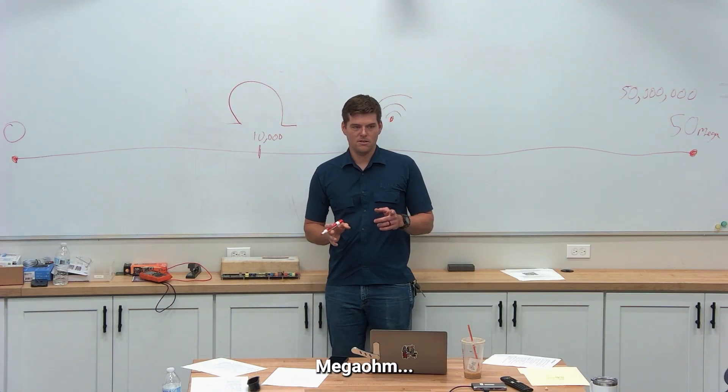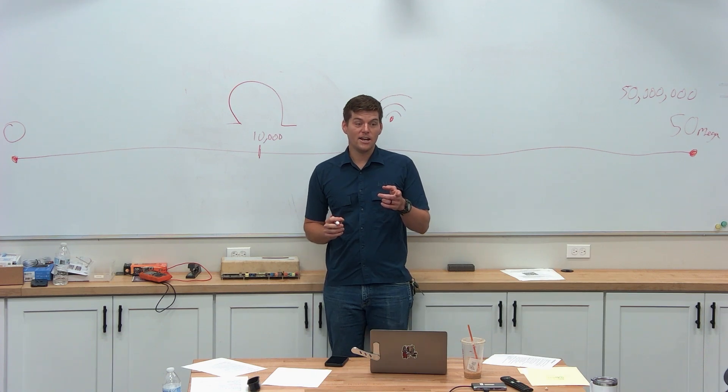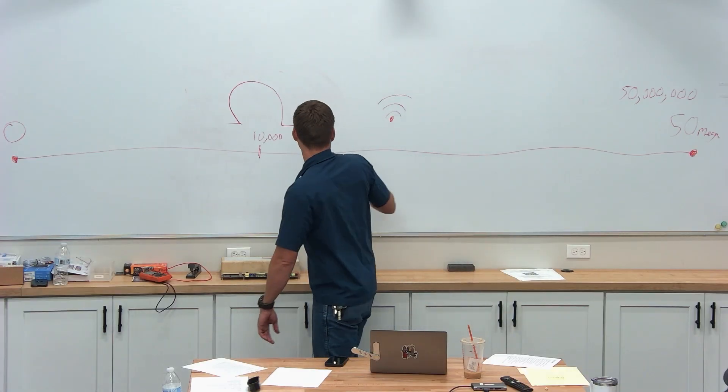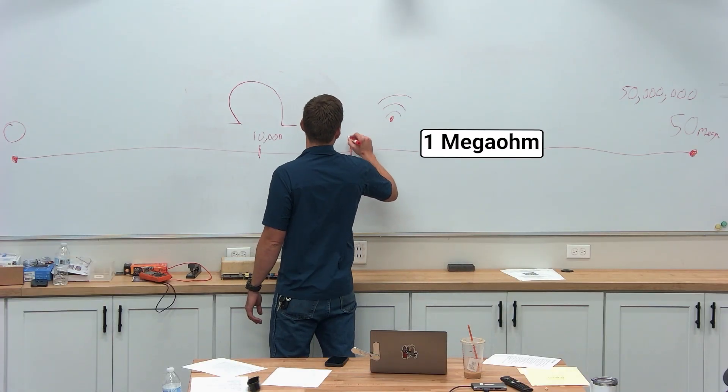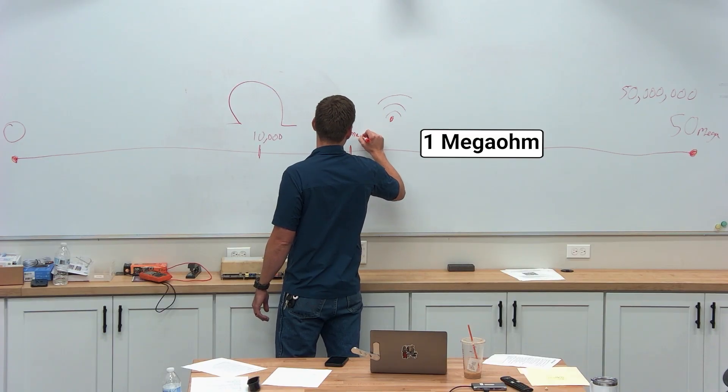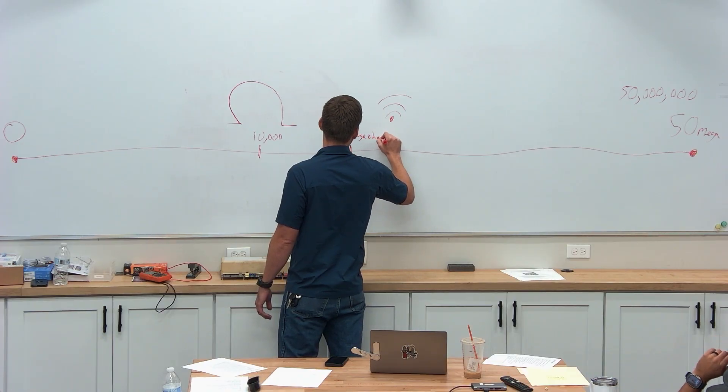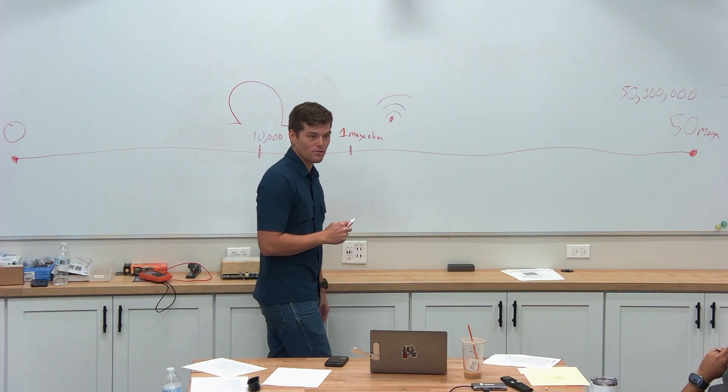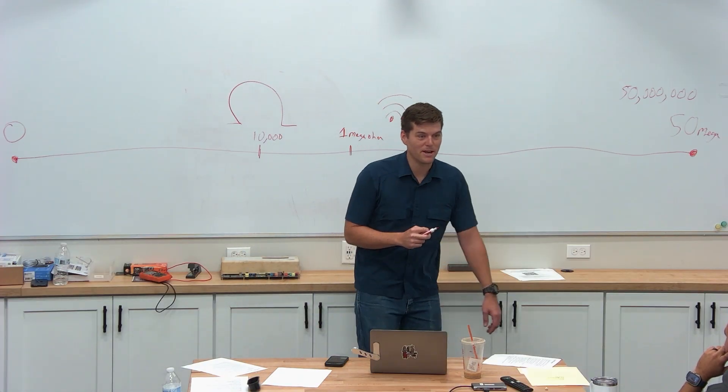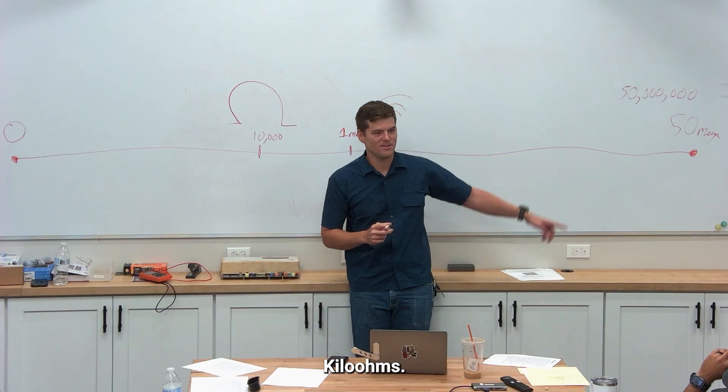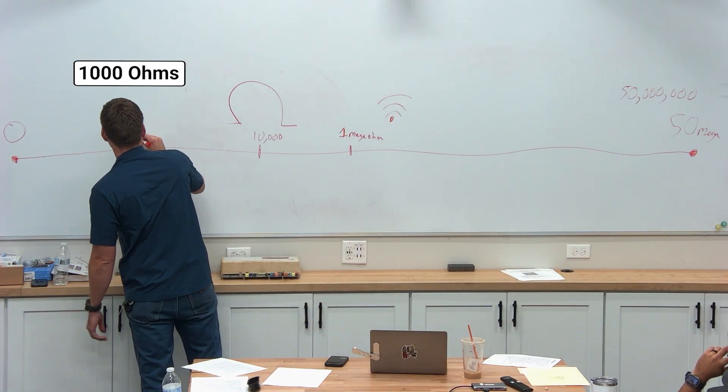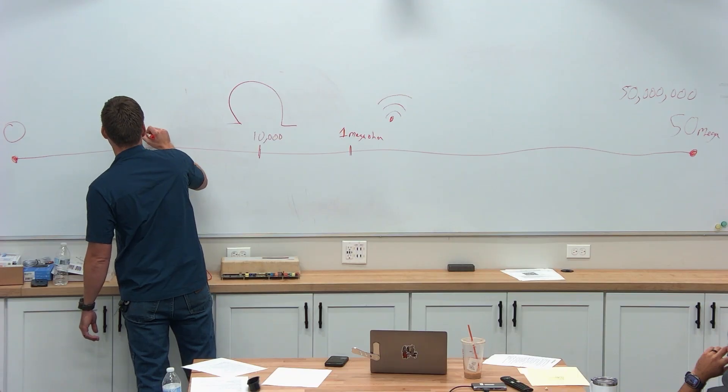Anybody else want to put a number on the board here? Megaohms. I think any type of resistance to ground... I need a number, not just a name. Megaohms, what number? One megaohm. Anybody else have suggestions? 1,000 kiloohms. That's past my scale. So 1,000 ohms. 10 ohms.